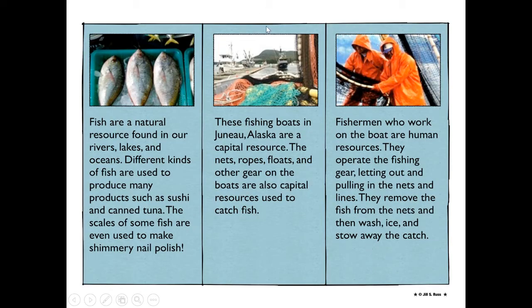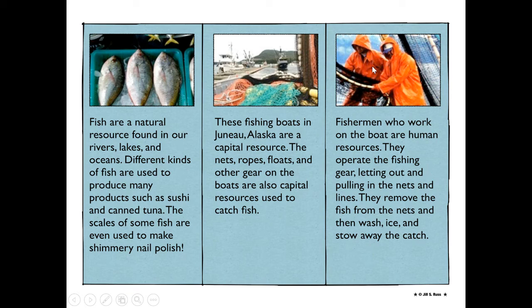Here's another example — some fishermen. Fish are a natural resource; they're found in rivers, lakes, and oceans. Different kinds of fish are used to produce many products such as sushi and canned tuna. The scales of some fish are even used to make shimmery nail polish. These fishing boats in Juneau, Alaska are a capital resource. They also have nets, ropes, floats, and other gear on the boats that would be capital resources used to catch the fish. These fishermen who work on the boat are human resources. They operate the fishing gear, letting out and pulling in the nets and lines, remove the fish from the nets, then wash, ice, and stow away the catch.